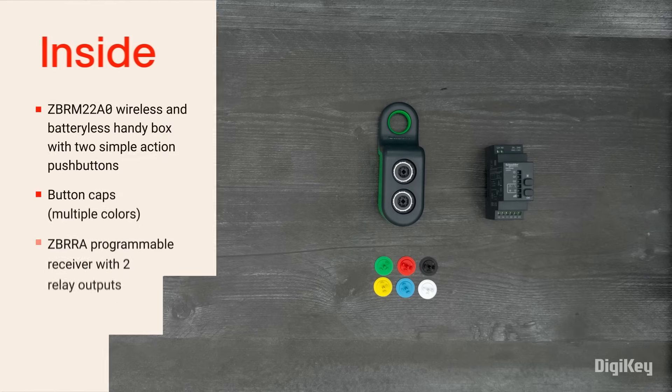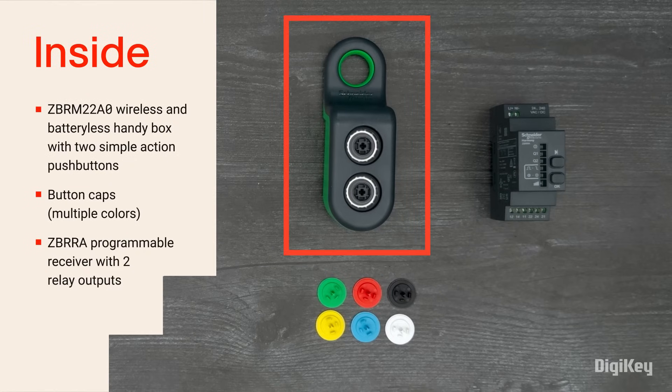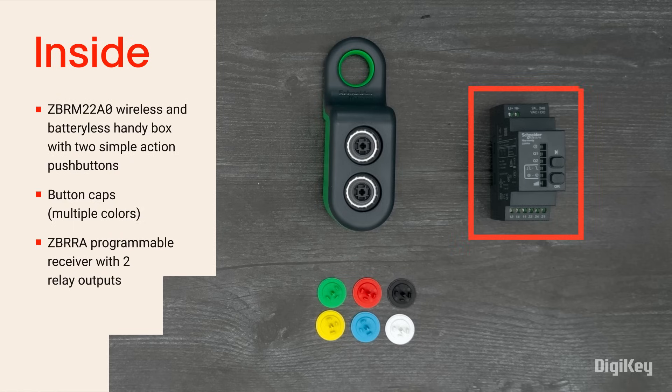Inside the boxes, you'll find the ZBRM22A0 wireless and batteryless handy box with two simple action push-buttons and multiple cap color options, and the ZBRRA programmable receiver with two relay outputs.